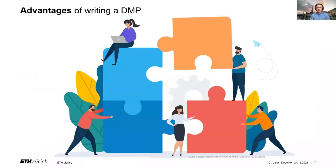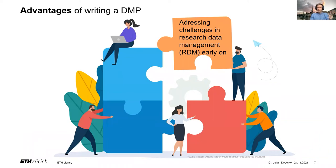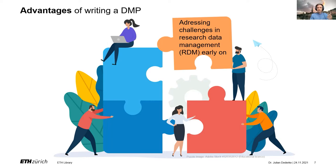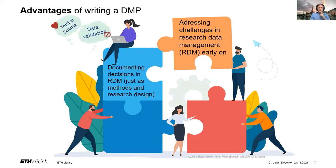Let's move on to the key advantages of writing a data management plan. First, it allows us to address challenges in research data management early on. We might face difficult decisions about how to store or manage data, which infrastructure or software to use, so it makes sense to think about those challenges early and find solutions at the beginning of a project. Second, it allows us to document decisions in research data management, just as we do for research design or methods. It's important to allow traceability of the decisions we took, and this also facilitates data validation later on, as your DMP can really be considered part of the metadata connected to your project.